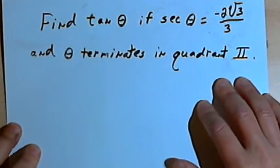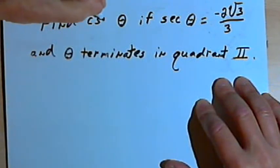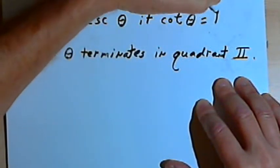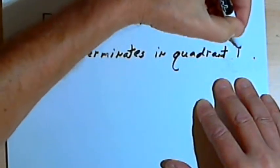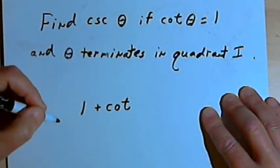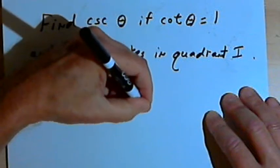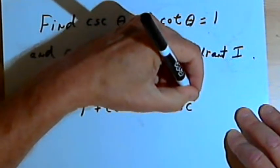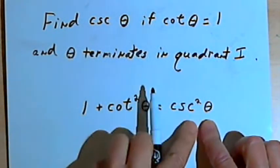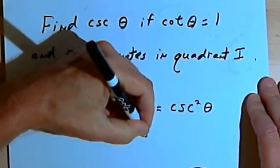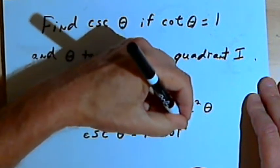Let's fit in one more. Find the cosecant of theta if the cotangent equals 1, with theta in the first quadrant. The Pythagorean identity we want — the one that has cotangents and cosecants — is: 1 plus the cotangent squared of theta equals the cosecant squared of theta. Swapping sides, cosecant squared of theta equals 1 plus cotangent squared of theta.